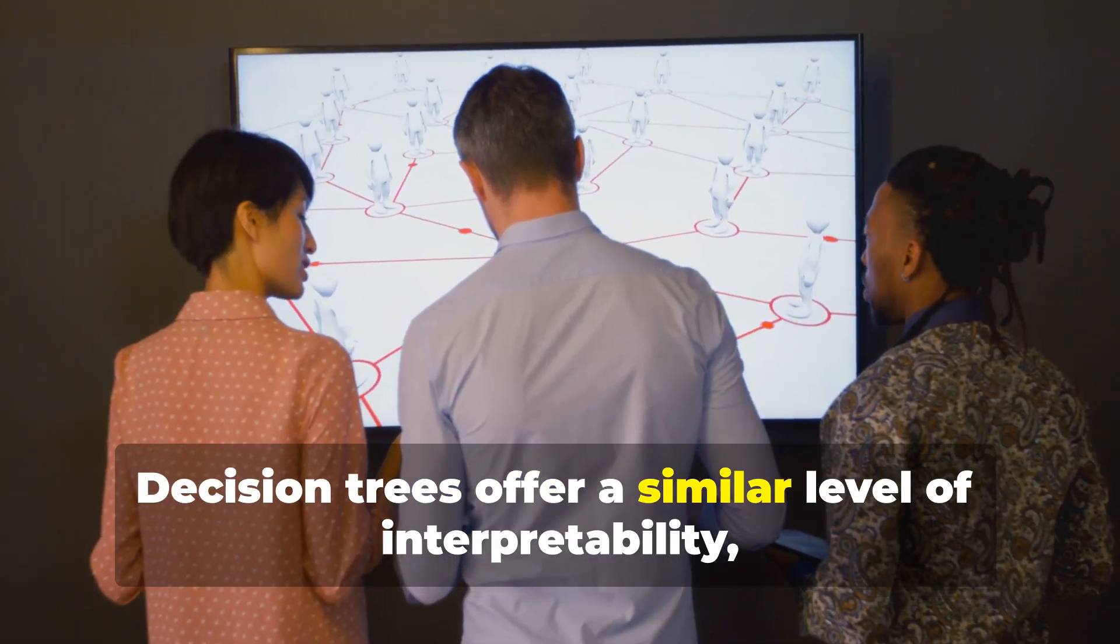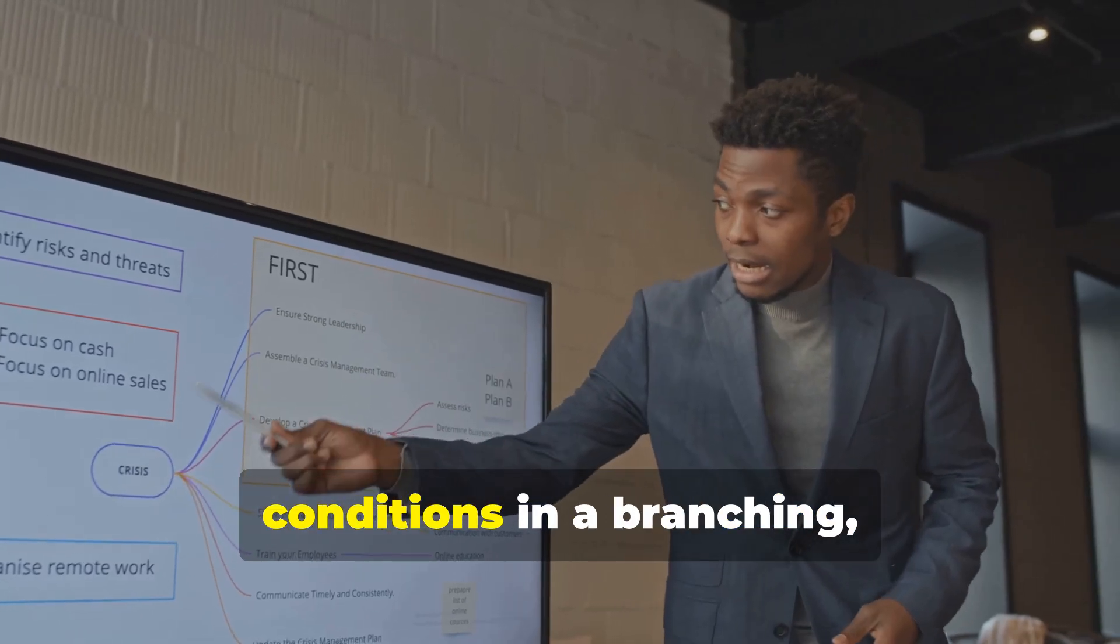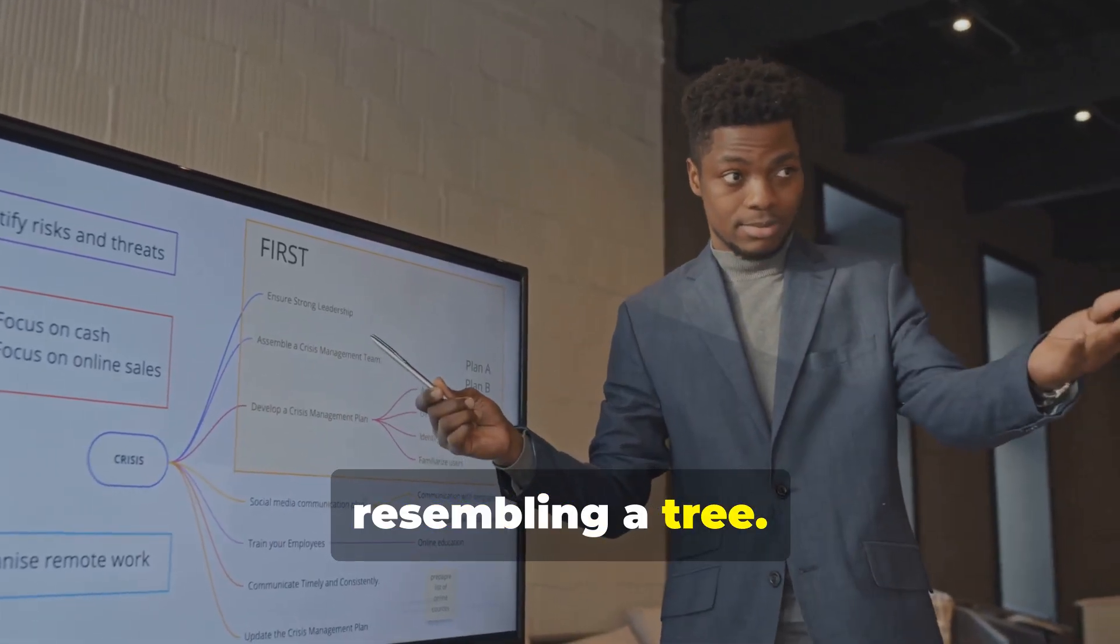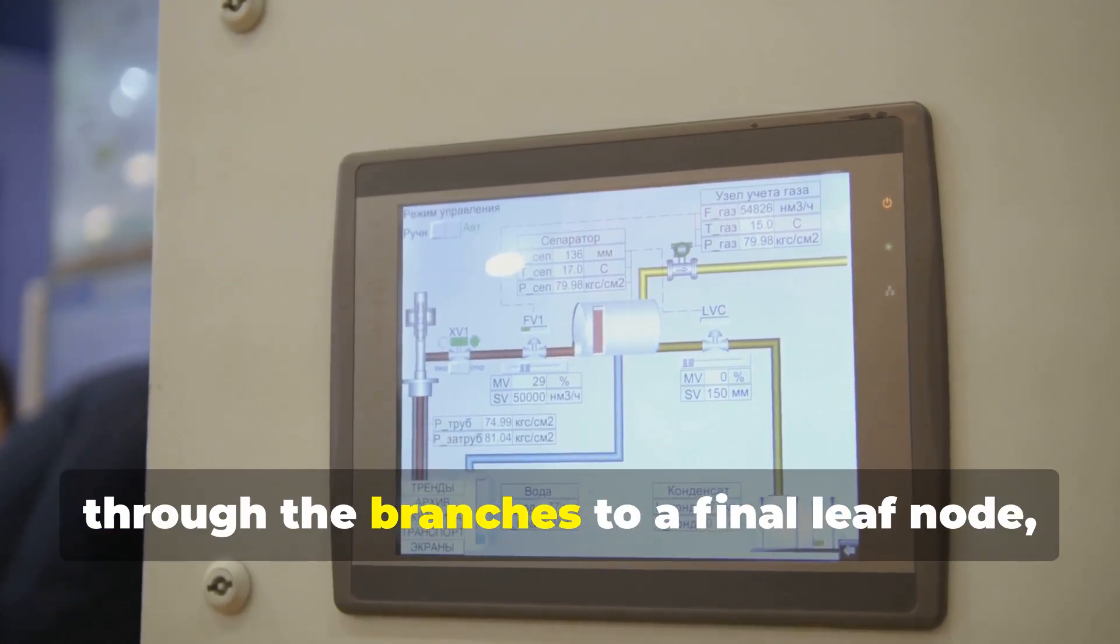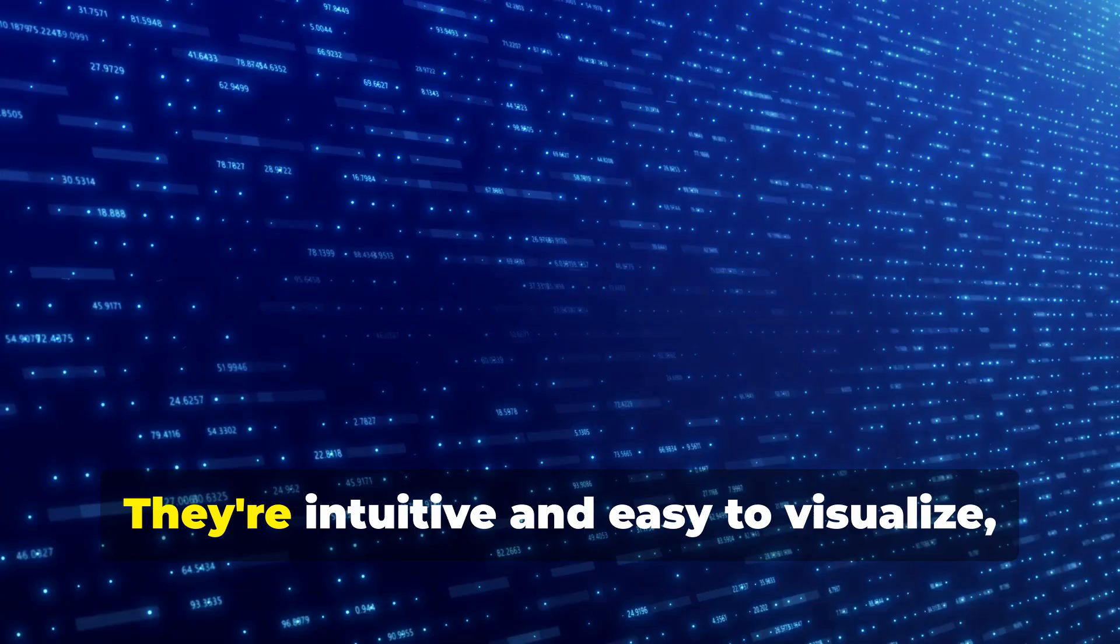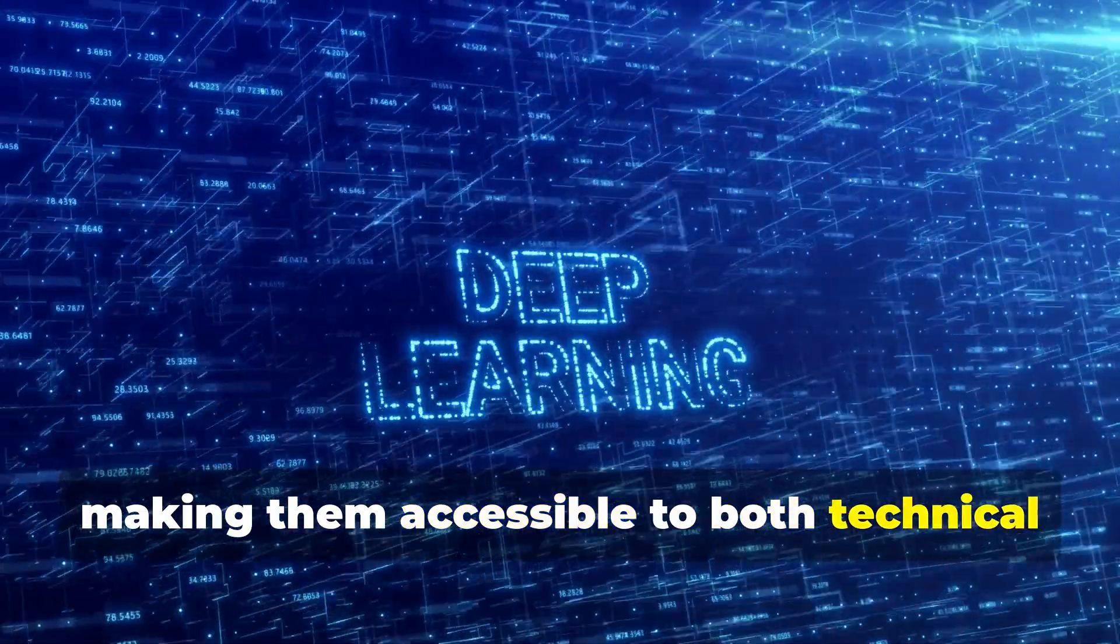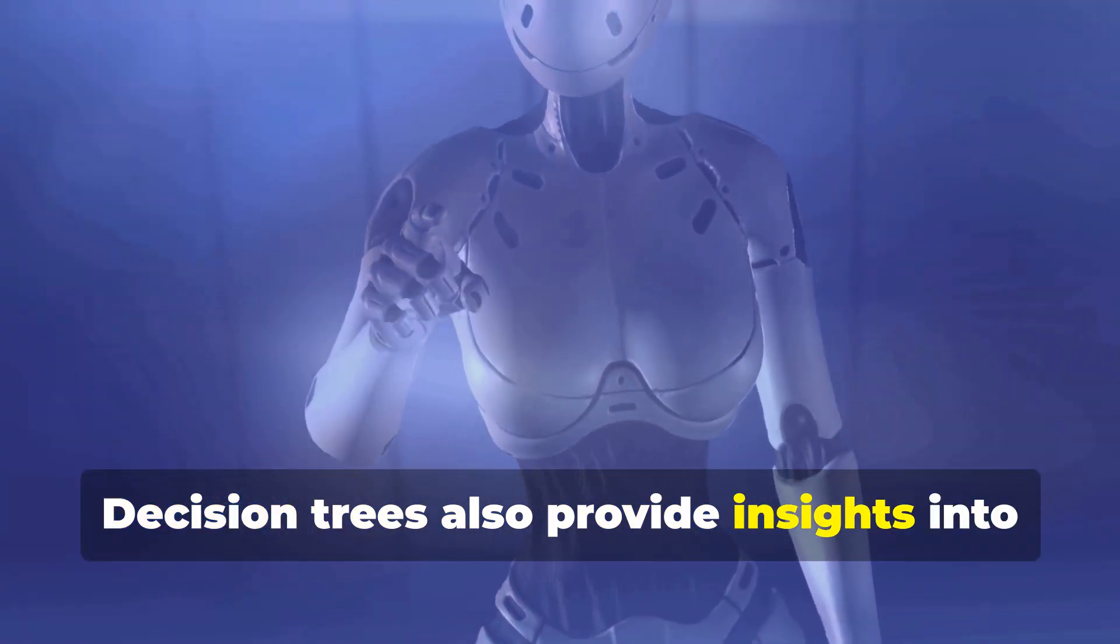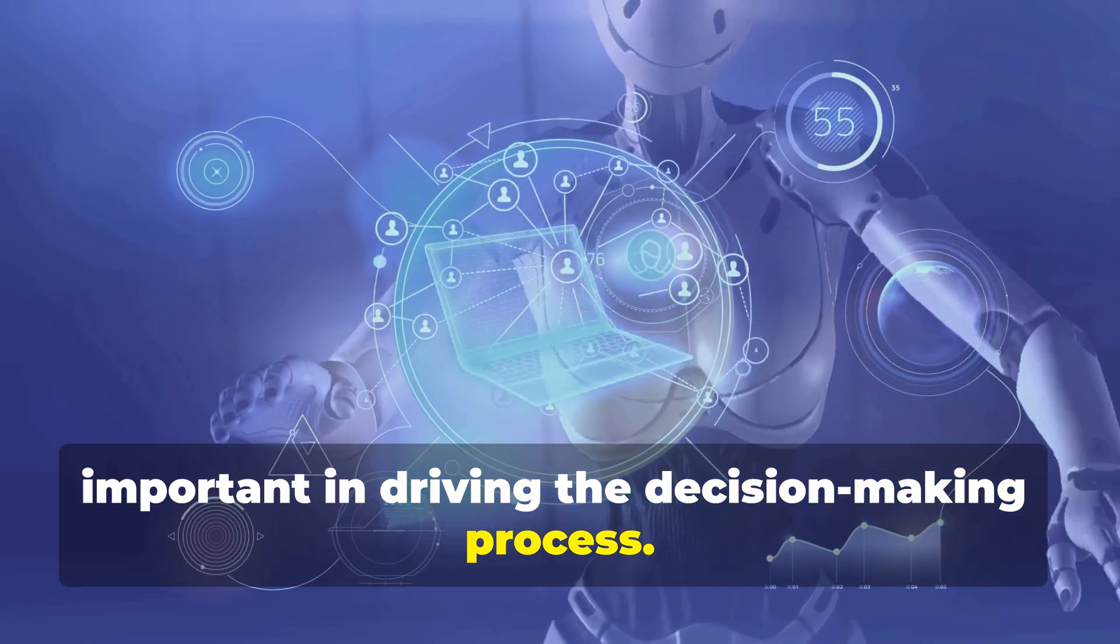Decision trees offer a similar level of interpretability, but they organize questions and conditions in a branching, hierarchical structure, resembling a tree. To arrive at a decision, you follow a path from the root node down through the branches to a final leaf node, which represents the predicted outcome. They're intuitive and easy to visualize, making them accessible to both technical and non-technical audiences. Decision trees also provide insights into which features or variables are most important in driving the decision-making process.